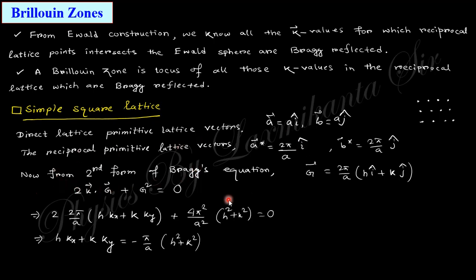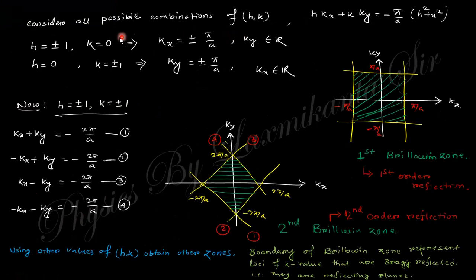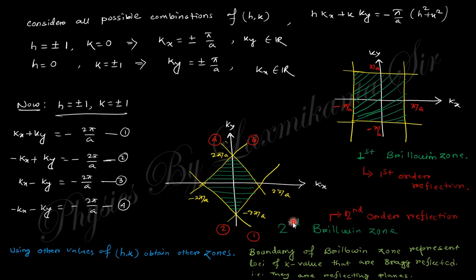This Bragg equation in reciprocal lattice will be proved in the upcoming lecture. Substituting K and G into the equation and using allowed values of h and k: when h=1, k=0, we get kx equal to a specific value, and similarly for ky. These four lines define the first Brillouin zone. Using further combinations of h and k gives four more lines forming the second Brillouin zone. So these represent the first and second order reflections respectively.